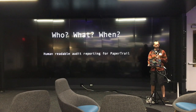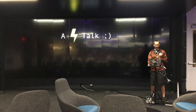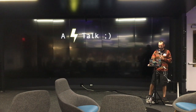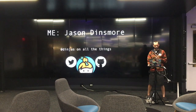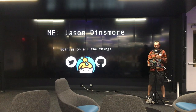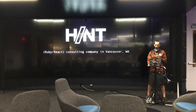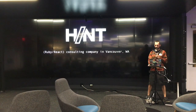A little background. This is a lightning talk. About me — my name is Jason Densmore. I'm Dengis on all the things: Twitter, GitHub, Keybase. I work at a company called Hint across the river in Vancouver. We're primarily a Ruby and React consultancy.